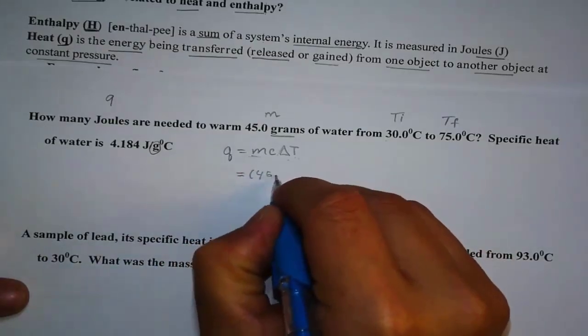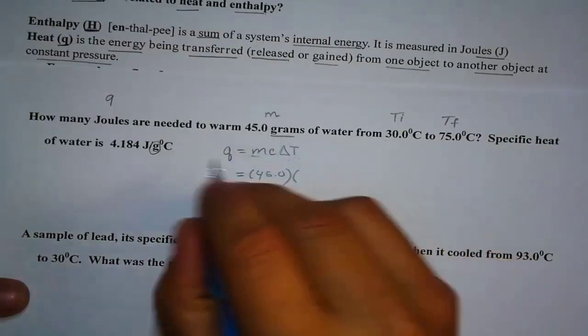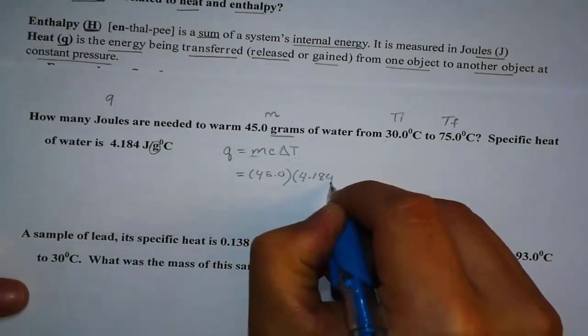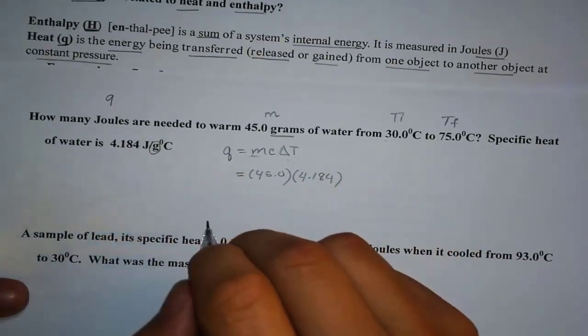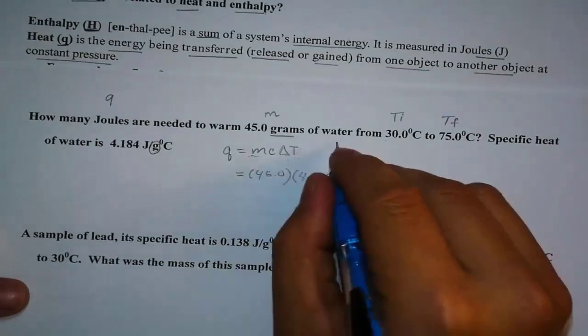So in this case, your mass is 45.0. And notice how I don't put the unit there. And my specific heat capacity is 4.184. Again, I did not put the unit there. That way it doesn't confuse. And then the last thing we have is delta T...